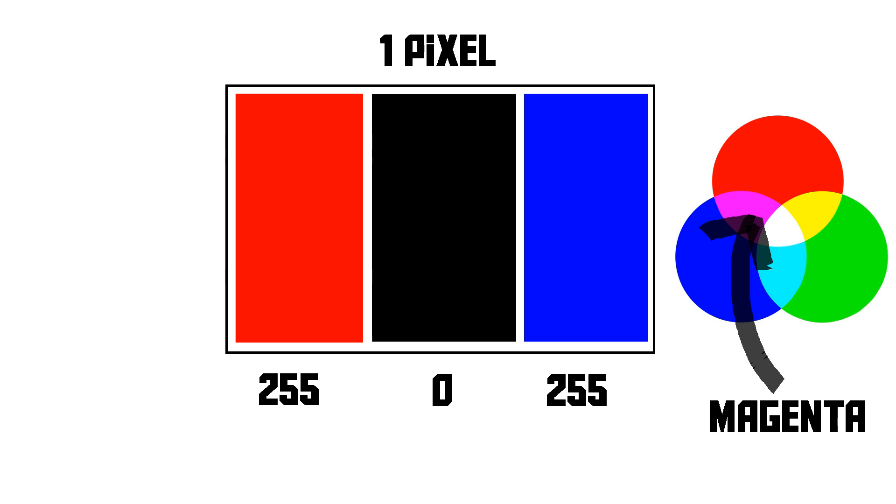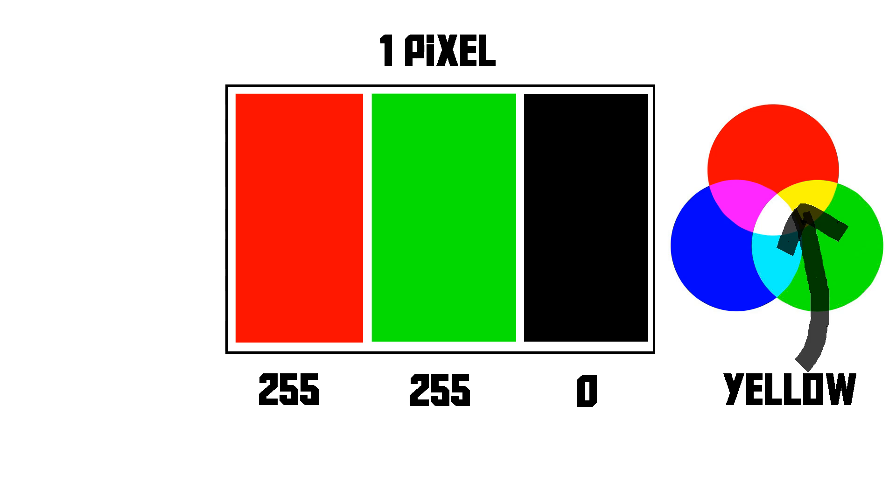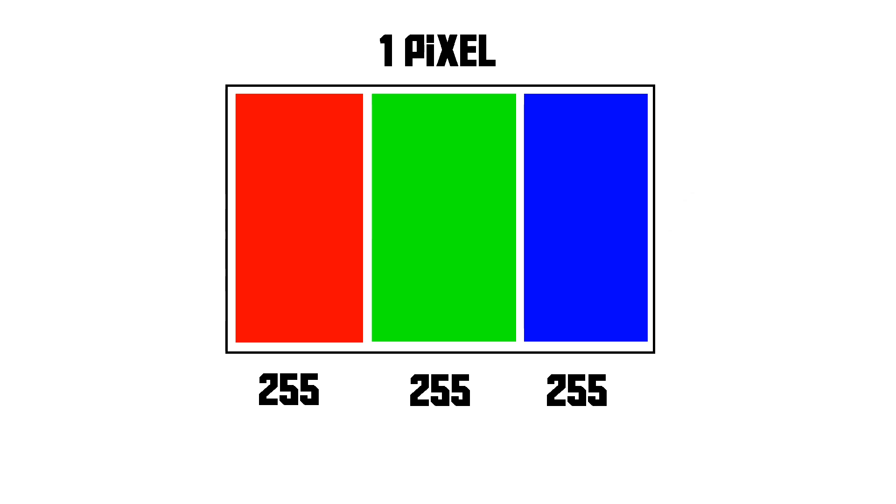So, if we turn off the blue pixel, we can get the colour that we all know as yellow. And so on. So you can create any colour that is possible, that exists in this universe, using these three sub-pixels and by changing their values.